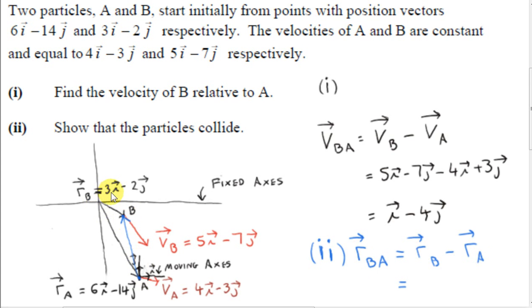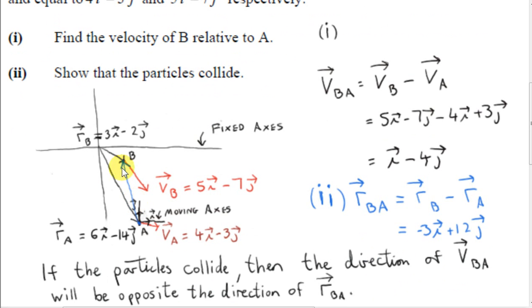So let's take the i component of vector RB. That's 3. Subtract the i component of RA, 6. 3 minus 6 is minus 3i. And then we take the j component of RB minus 2 and subtract the j component of RA minus 14. Minus 2 minus minus 14. Minus 2 plus 14 is plus 12.